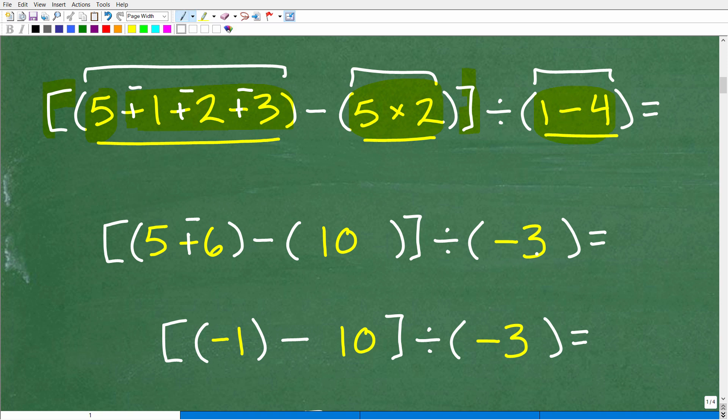So 5 minus 1 minus 2 minus 3, you've got to be very careful here. This is really the same thing as 5 plus a negative 1 plus a negative 2 plus a negative 3. So this is really the same thing as 5 plus a negative 6. Now you could write it that way, or you can have 5 minus 6. So 5 minus 6 is the same thing as 5 plus a negative 6. We'll get to the result of that in a second. But let's go ahead and take care of this set of parentheses. So we have 5 times 2, which of course is 10. And then right here, 1 minus 4, we've got to be very careful here, is negative 3.